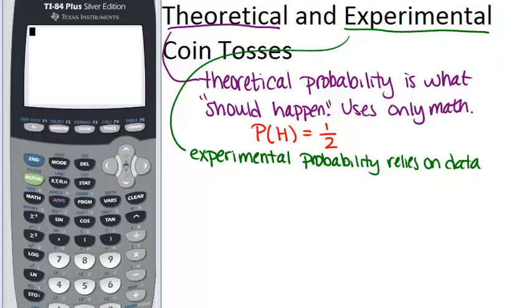So if we want to figure out the experimental probability that you will get heads when you toss a coin, we would actually need to toss a coin multiple times and see how many times did we get heads out of the total number of times we tossed the coin. Now, you can actually do that with a coin, or your calculator has an interesting application that will simulate different probability situations.